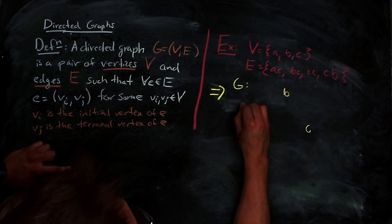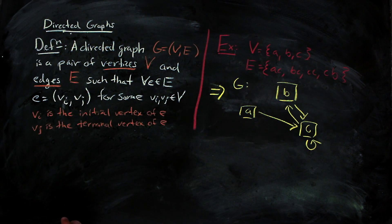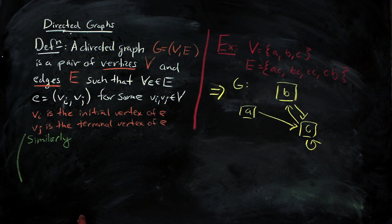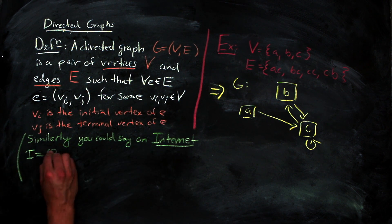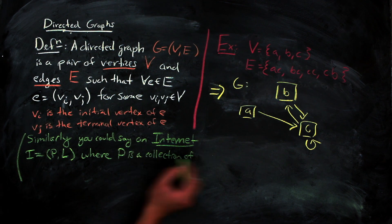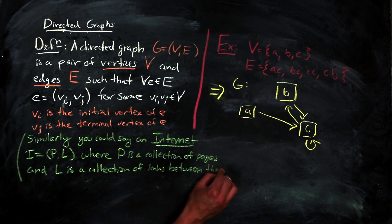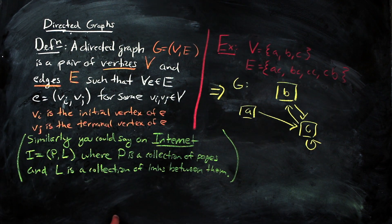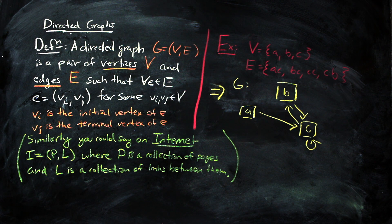we would have a graph that looks kind of like this. To make the connection to our question a little bit more explicit, you could define an internet, I, if you wanted to, as a collection of pages, P, and a collection of links between those pages, L. A link, little l, is a directed edge between two pages.